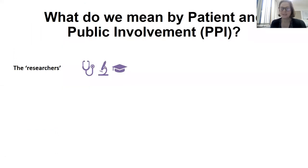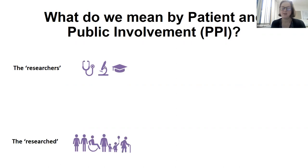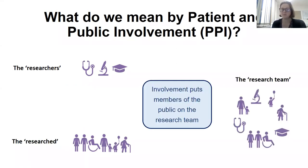Going over a little bit what was said in the introductory section, what do we actually mean by patient and public involvement? I'm going to use the term PPI throughout. So traditionally, we used to have a group of researchers — whether that be basic scientists, clinicians, other allied health professionals — who tended to work very separately from patients or those individuals that were being researched. What PPI is really doing is putting members of the public in the research team.